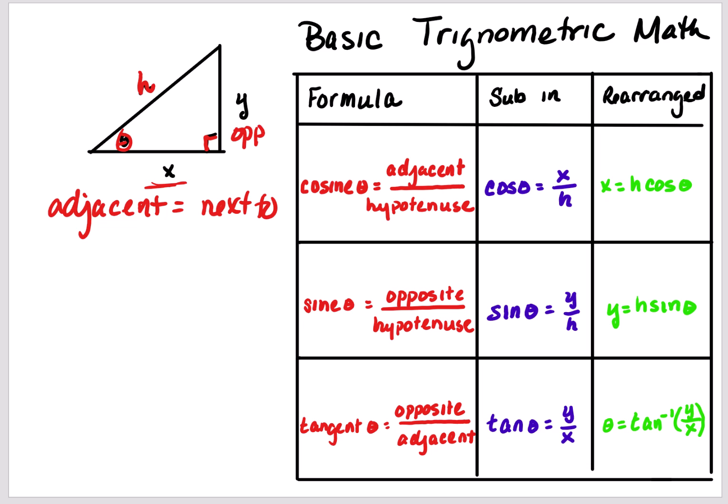The basic trig functions are cosine theta, which is adjacent over hypotenuse. This can be rewritten as cosine theta equals x over h, because x is next to the theta.